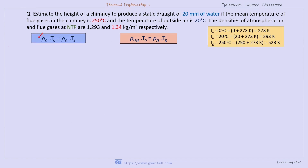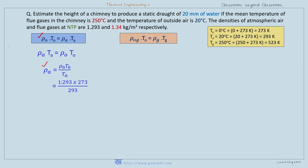From ρ₀·T₀ = ρ_A·T_A, we get ρ_A = ρ₀·T₀ / T_A. Substituting values: ρ₀ = 1.293 kg/m³, T₀ = 273 K, T_A = 293 K. Doing the calculation gives ρ_A = 1.205 kg/m³, which is the density of air at 20°C.